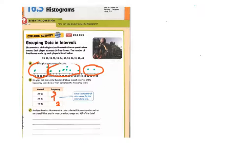Now let's analyze the data. How was the data collected? Well, they took how many free throws were made out of 50 and wrote them down, then we put it on a dot plot. They also ask for the mean, median, range, and interquartile range of the data — and we can do that.